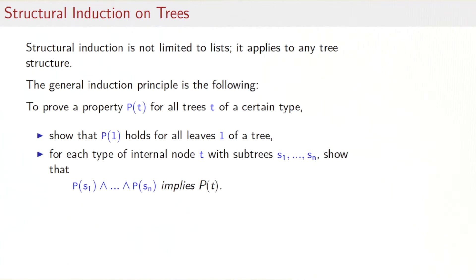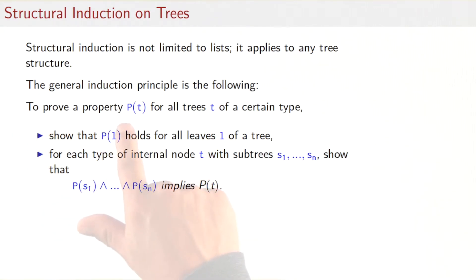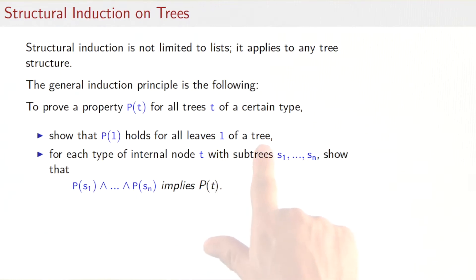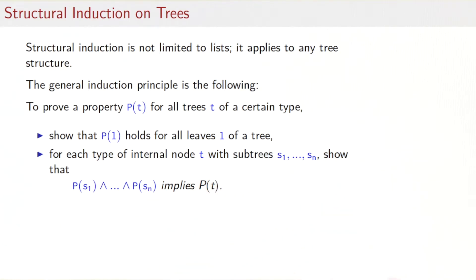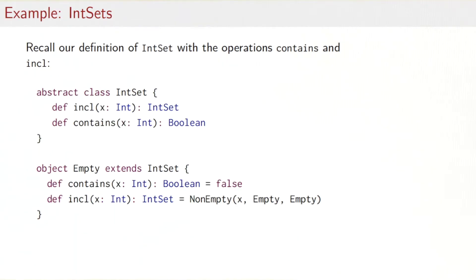We can generalize the structural induction principle for lists to arbitrary tree structures. The principle then becomes the following: to prove a property P of T for all trees of a certain type, we need to show that P of L holds for all leaf types of the tree, and for each type of internal node T with subtrees S1 to SN, we need to show that under the assumption that P(S1) through P(SN) all hold, then P of T holds.